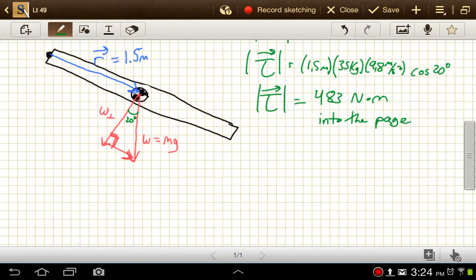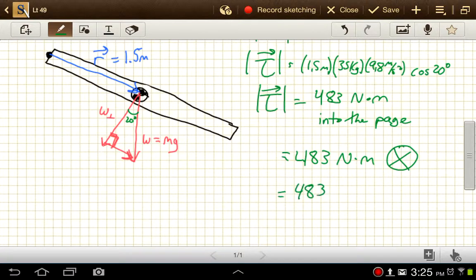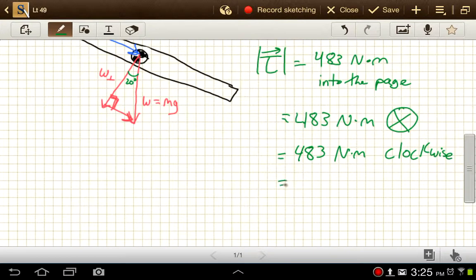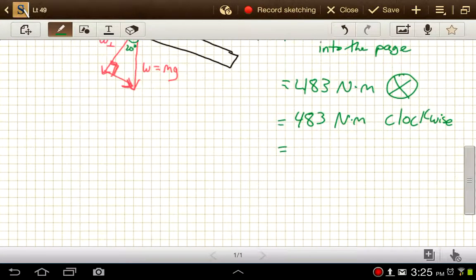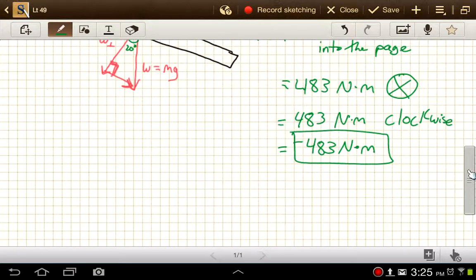Or another way to write that would be 483 Newton meters, and then show it like this. Or, I could write 483 Newton meters clockwise. Or a final version, since typically we'll say clockwise is negative and counterclockwise is positive when we're looking at these two-dimensional drawings, we could just call that negative 483 Newton meters for the torque caused by gravity on this ramp.